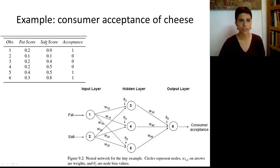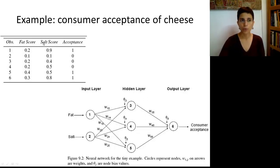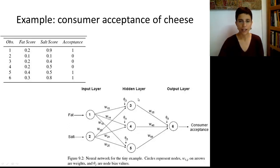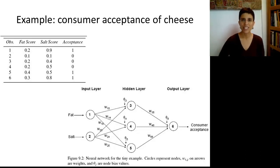Let's look at a small example where we only have six records and we're trying to predict the acceptance of a certain cheese given two inputs: the fat score and the salt score. So we have x1 and x2, and acceptance is y. Suppose we want to build a network using the same architecture we saw before: an input layer, a hidden layer, and an output layer. Because we have two predictors, our input layer will include two nodes — one for fat and one for salt score. Suppose we use three nodes in the hidden layer.